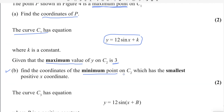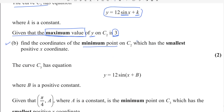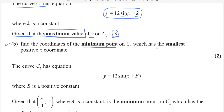In this question, two things are given: the maximum value of y is 3, and the function is in sine. The maximum value for sine is 1. So you can use maximum value for sin x as 1, and at that point the value of y is 3. First, let us find k by using this information.